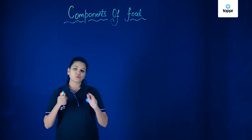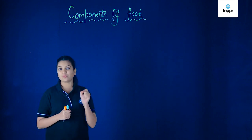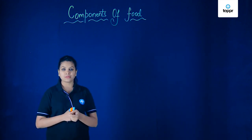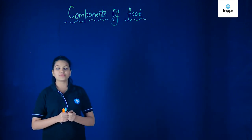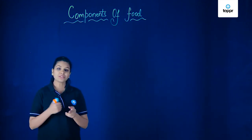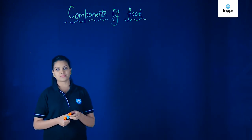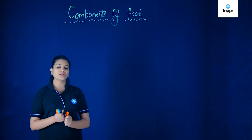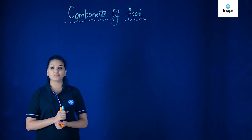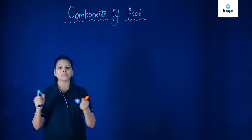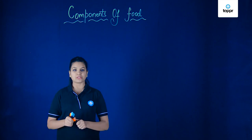Now this food performs so many functions with the help of its basic components, and these basic components, which are nothing but chemical substances present in the food, are what we call nutrients. Nutrients are the basic components of our food and there are a number of nutrients present in our food.